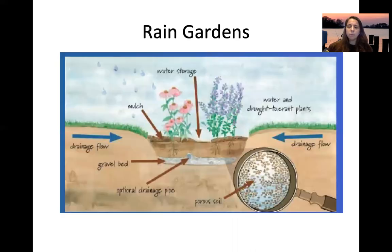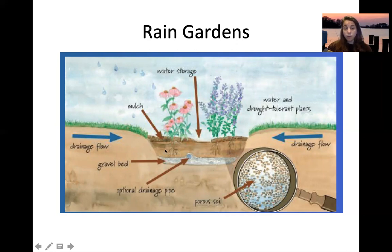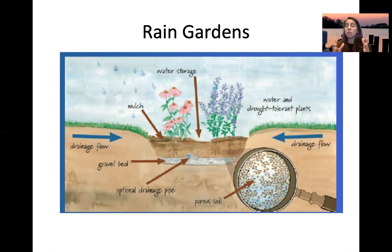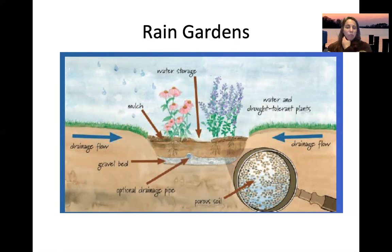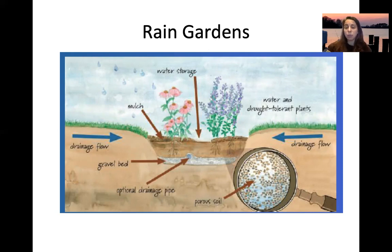We're going to concentrate first on rain gardens. A rain garden typically has porous soil and water and drought-tolerant native plants. If there's a drainage pipe, it's traditionally called a bioswale. Rain gardens typically don't have that drainage pipe. You have mulch, and it's placed where it will receive water and let it drain down through the porous soil.